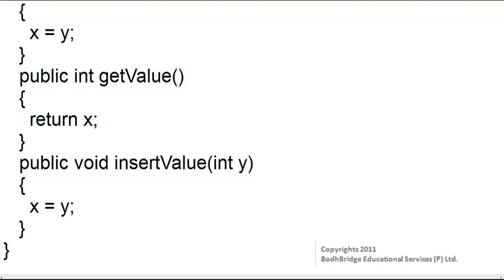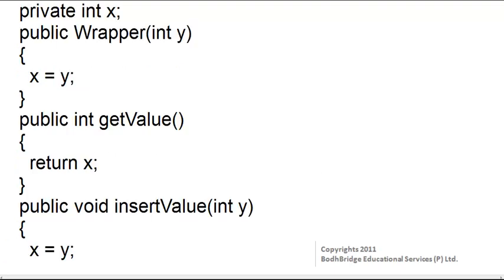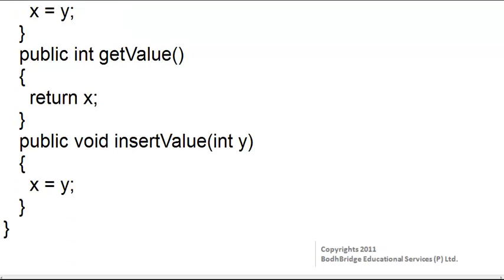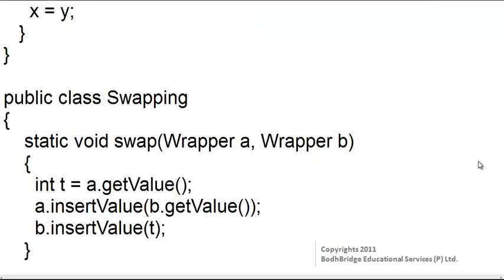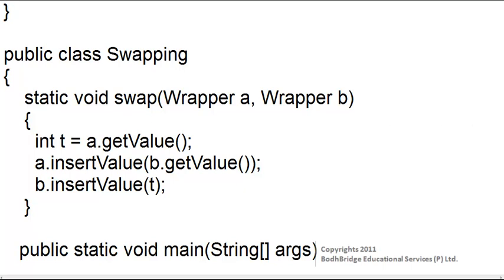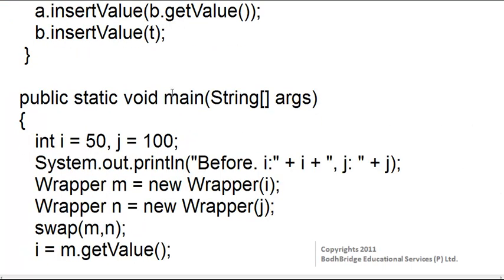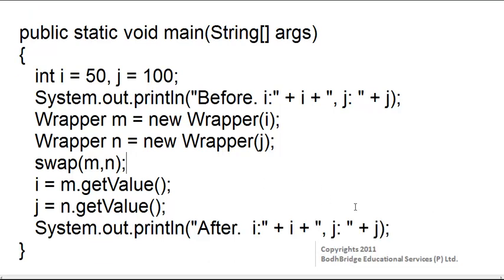Using these three methods we can swap the values of two numbers. This is the swap method. In the main method, the variables i and j are initialized to some values — these are the numbers we need to swap. First we wrap the variables using the wrapper class we defined, and then the swap method is called for both these variables.